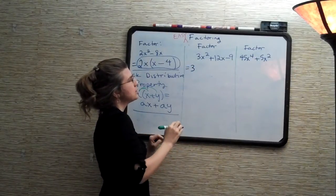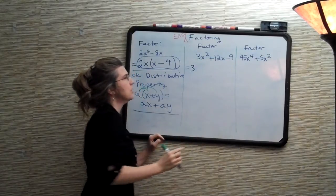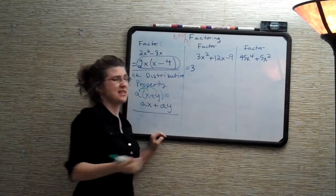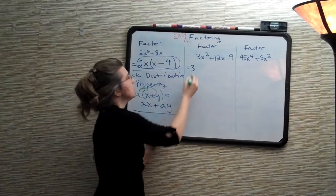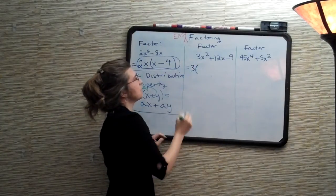What is the lowest power of x that is present in all three terms? Well, notice that the minus 9 doesn't even have an x, so I can't take an x out at all. So my biggest common factor here will be 3.